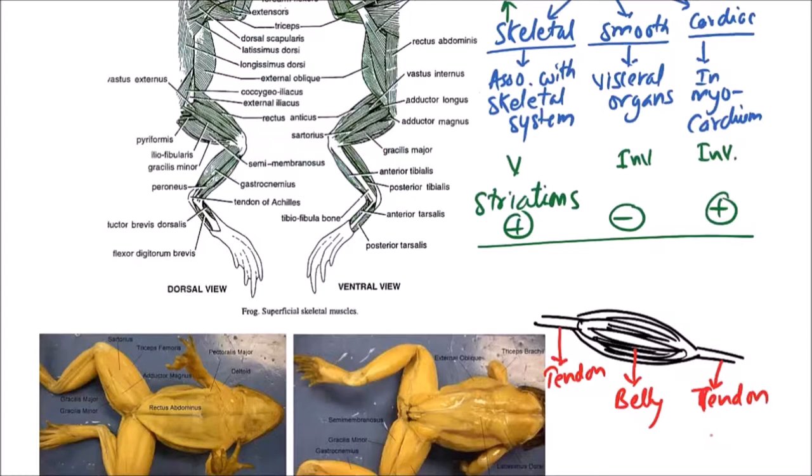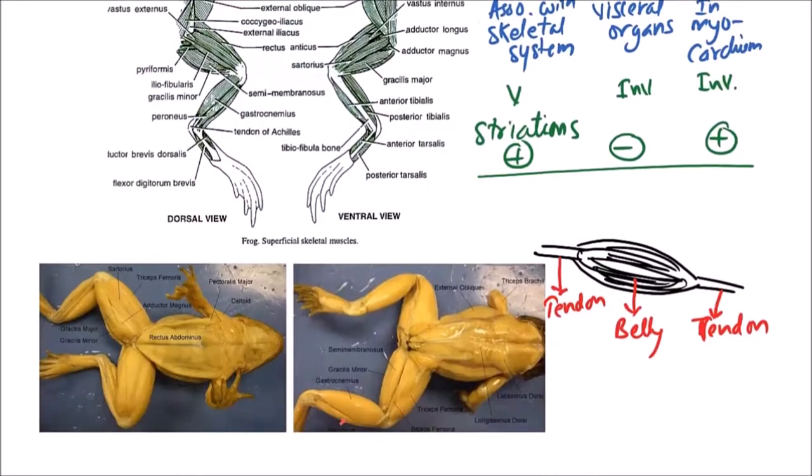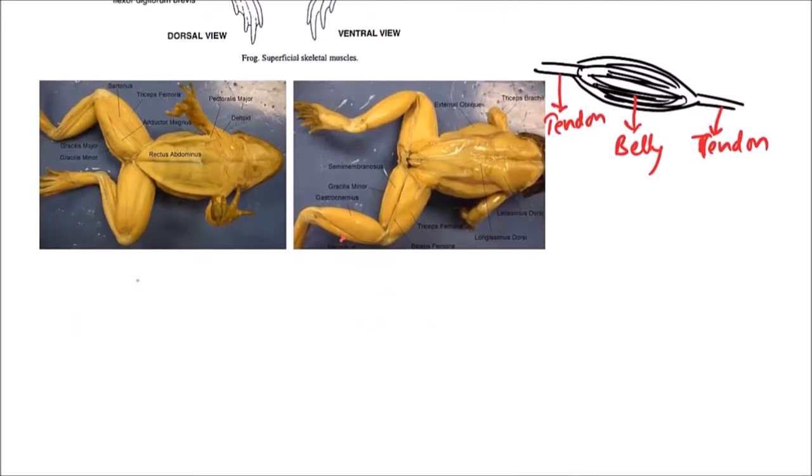Now depending upon the mode of action, the muscles in frog are grouped into following categories.